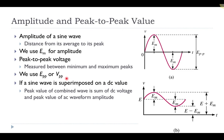If a sine wave is superimposed on a DC source — for example, an AC source placed in series with a DC source — the overall voltage still oscillates in time but is shifted upward, so it doesn't necessarily reach zero or go negative. This means the waveform oscillates around a non-zero DC offset.